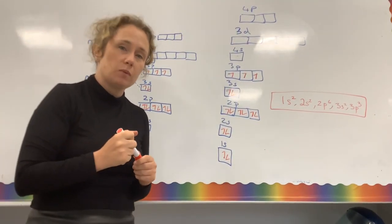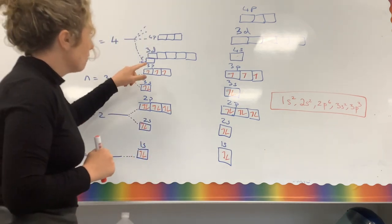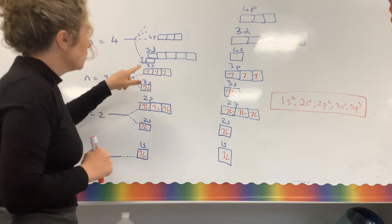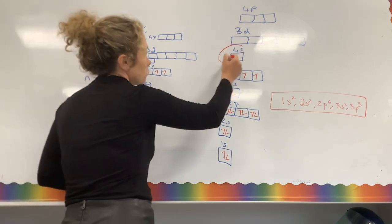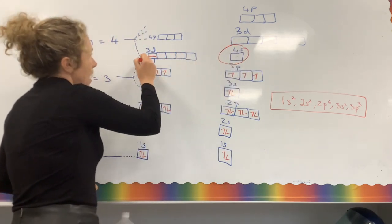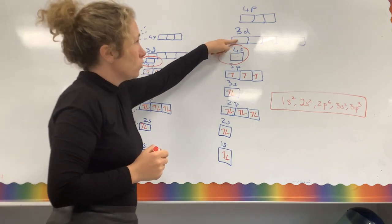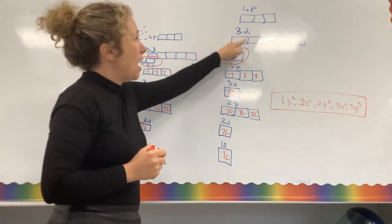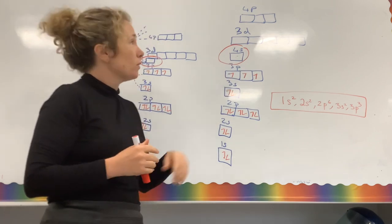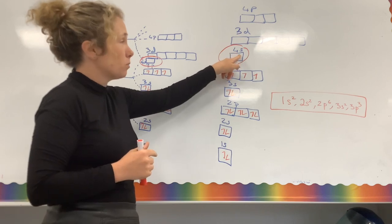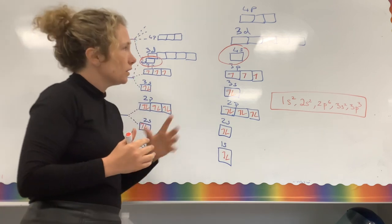There are two exceptions to the rule: copper and chromium. They both have a half-filled 4s orbital — only one electron in that 4s orbital. Copper has a full 3d orbital, and chromium has a half-full 3d orbital. This is more energetically stable for them, so they take that one electron from the 4s and put it up to the 3d.